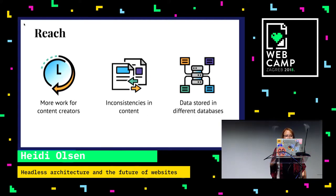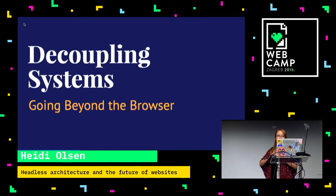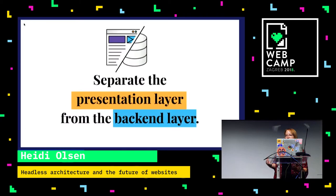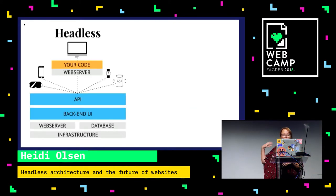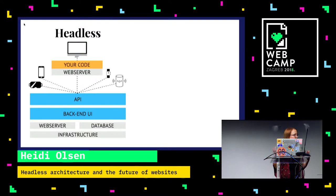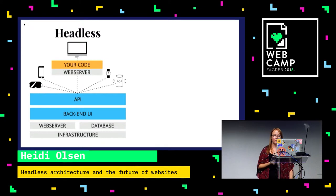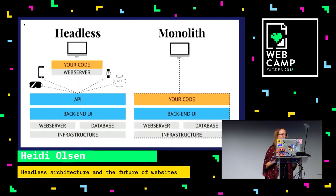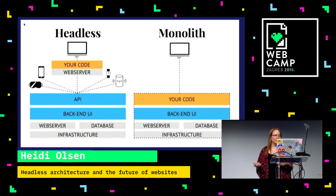There is a different way to do this, and that is what's called headless architecture — the decoupling of systems. What that means is you separate the presentation or front-end layer from the back-end layer where all the content and data is stored. Your web server and database is part of the main infrastructure, you have a back-end UI or dashboard where people can add content, a series of APIs that can send that data to multiple different channels, and then your presentation layer is hosted on a separate web server — separate from all that — and ported to your browser or any other device.